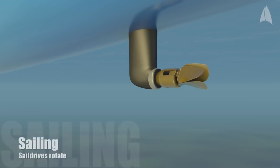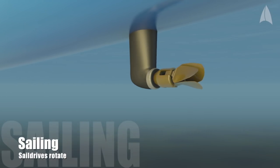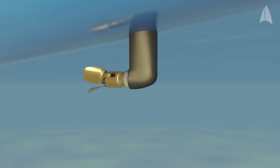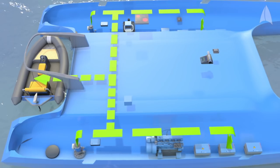During regeneration, the sail drives rotate 180 degrees, forcing the folding propeller open. When facing the water flow forward, the propellers become highly efficient and deliver unprecedented power to the motors and batteries.